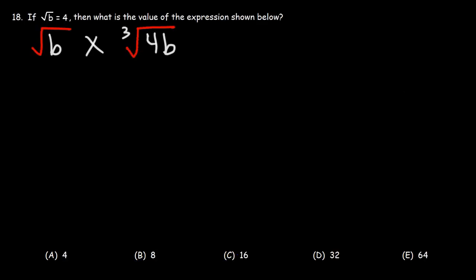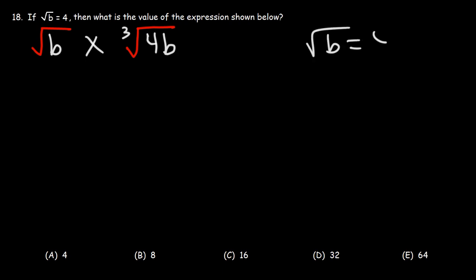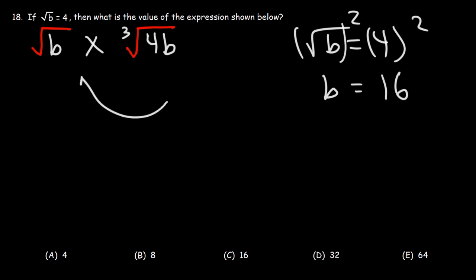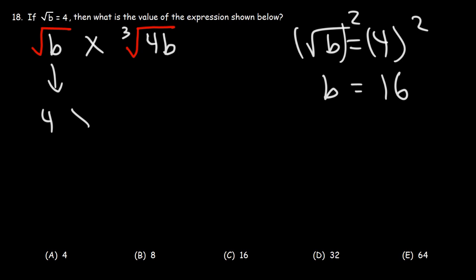Number 18. If the square root of b is equal to 4, then what is the value of the expression shown below? We're going to calculate the value of b and then plug it into that expression. To get rid of the square root symbol, we take the square of both sides — the square of the square root of b is just b, so b is 4 squared, which means b is 16. We already know that the square root of b is 4, so we can just replace that with 4, and we'll replace b with 16 on the right side.